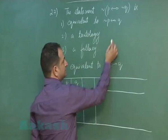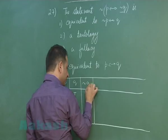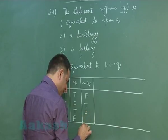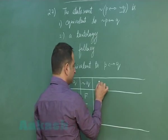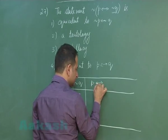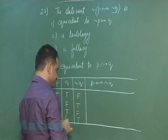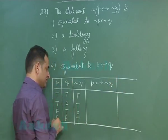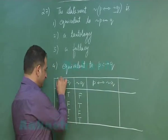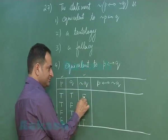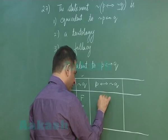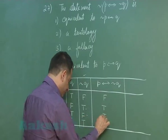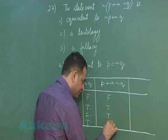The negation of q gives: false, true, false, true. For the biconditional p ↔ ¬q, this will be false if one of the two is false. So we get: false, true, true, false for p ↔ ¬q. Applying one more negation gives: true, false, false, true.